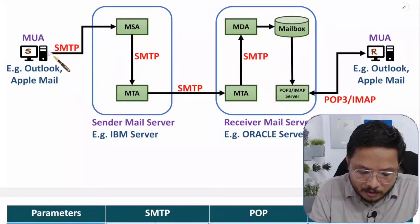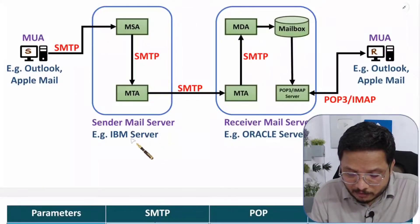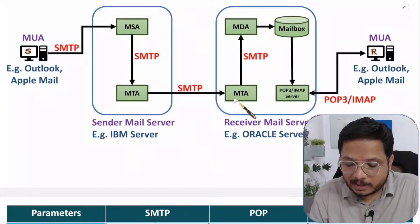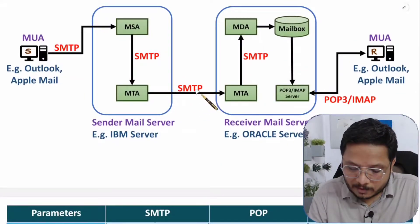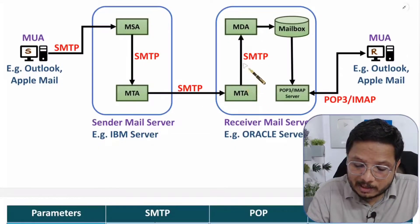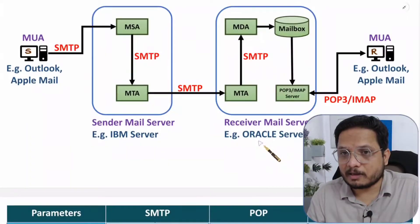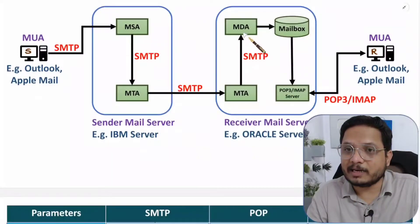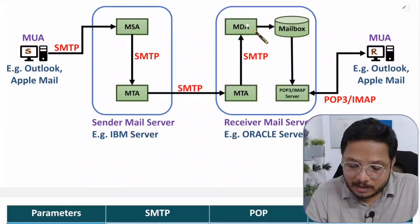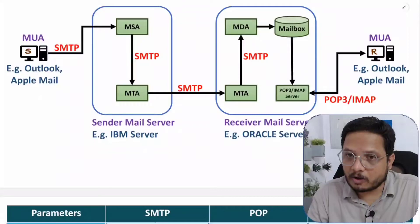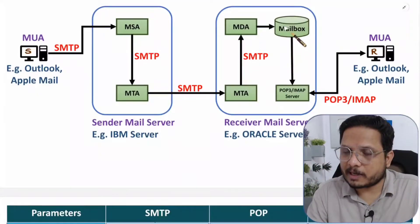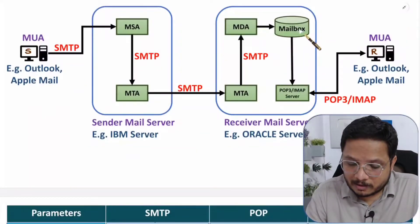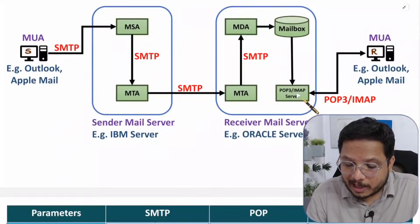The IBM server forwards this email to the Oracle server, and that transfer happens between MTAs — Message Transfer Agents — also using SMTP protocol. Once this email is received on the Oracle server side, the MTA forwards this email to the MDA — Message Delivery Agent — of the receiver server. The Message Delivery Agent receives this email from the MTA and places that email into the mailbox of the Oracle server. The mailbox is a well-defined storage inside which that mail is placed.